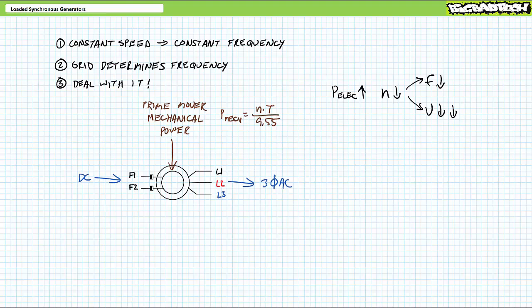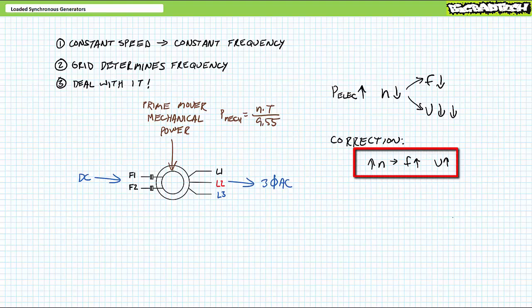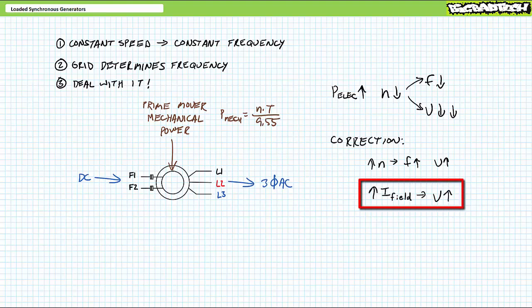Faced with this less-than-ideal scenario, an operator or control system has a couple of options: increase the mechanical power of the prime mover to speed up, and adjust field current. Which one first — speed or field current? If you said speed first, you're right. Since rotational speed influences both frequency and voltage magnitude, it makes sense to resolve frequency issues first, then when frequency stabilizes, fine-tune voltage magnitude using field current — this way you're not undoing previous corrections.